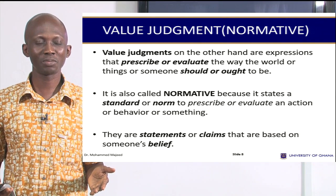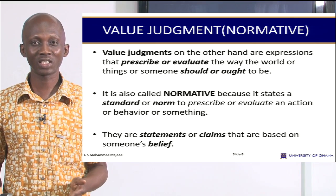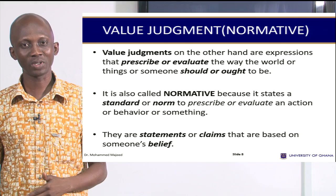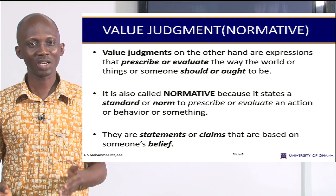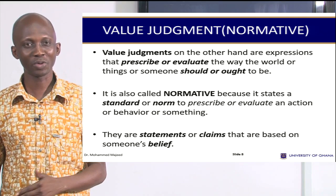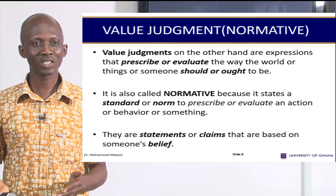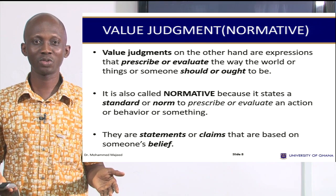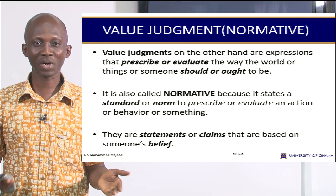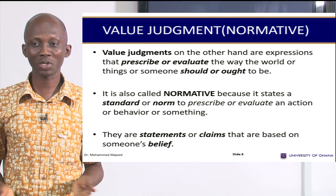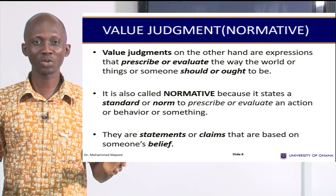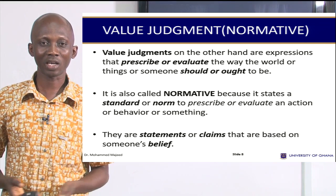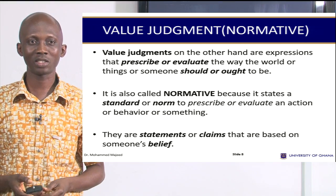We also said that value judgments, or normative sentences, could be moral and non-moral. Some value judgments are moral, others are non-moral. The ones that relate to morality are the ones I just mentioned. We could also judge how good or bad something is without referring to morality at all — such as when we say that Toyota is a good car. We are not saying that Toyota is a moral being.